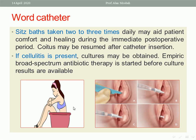Clean the wound with antiseptic solution. If cellulitis is present, cultures may be obtained and empiric broad-spectrum antibiotic therapy is started before culture results are available. After the balloon is inflated, insert the other end inside the vagina.